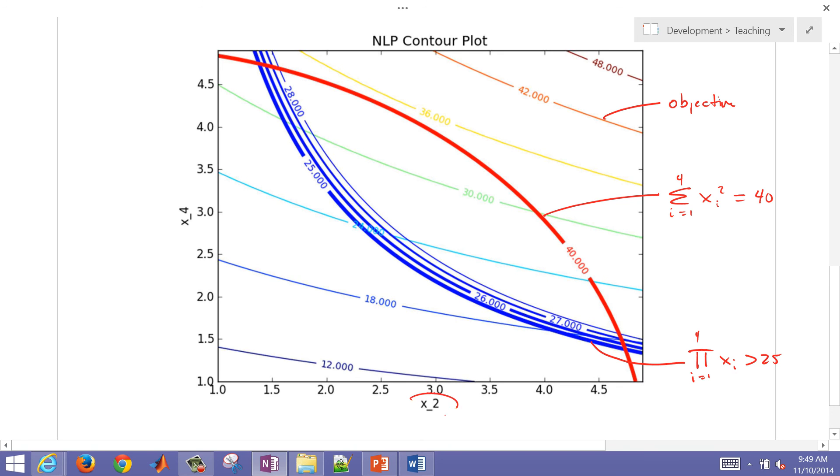In this case, I have four variables, but I'm just fixing x1 and x3 at the optimal values and just showing this contour map as I change x2 and x4. So let's say I've already determined the values of x1 and x3. This is what the contour map looks like.